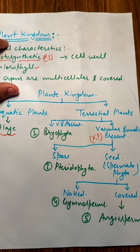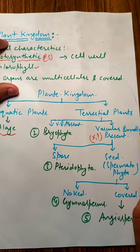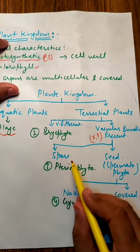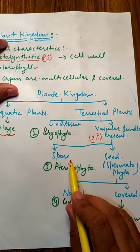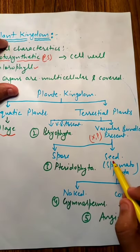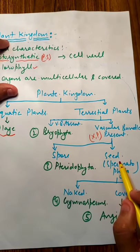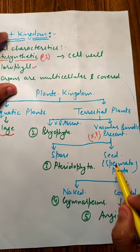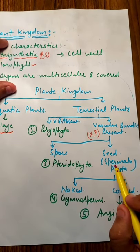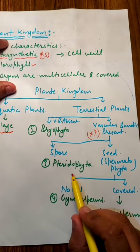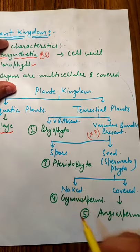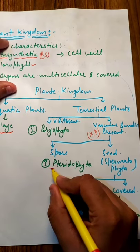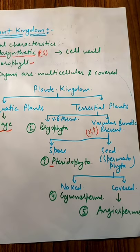Bryophyta में कोई vascular bundle नहीं होता है। Vascular bundle के basis पे आप दो categories आगे बनाओगे। One is which will form the spore — जो spore बनाएगी — और दूसरी जो seed बनाएगी। Seed के अंदर embryo present होगा और spore adverse condition में बनता है। तो spore formation वाली जो third division है वो pteridophyta है — यहाँ पे जो P है वो silent है। Seed bear करने वाले plants को हम spermatophyta बोलते हैं, phyta word is for the plant।